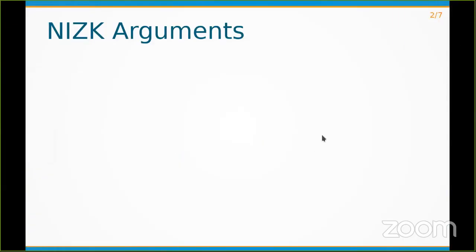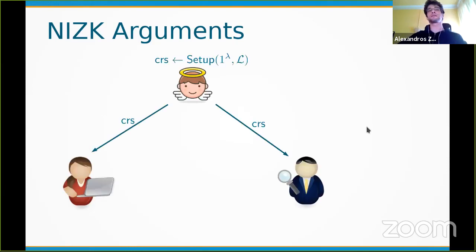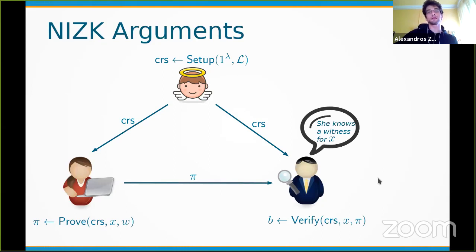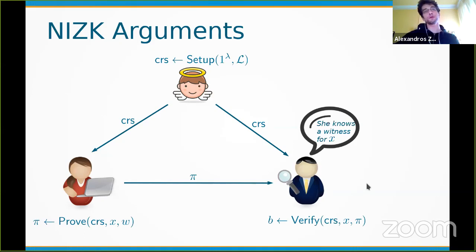In a non-interactive zero-knowledge argument system, the prover and verifier share a trusted common reference string. The prover claims to know a witness for a statement belonging to an NP language, sends a static proof, and the verifier runs tests. Three main properties are required: completeness (honest proofs verify), knowledge soundness (infeasible to prove without witness), and zero knowledge (verifier learns nothing beyond the prover knowing the witness).